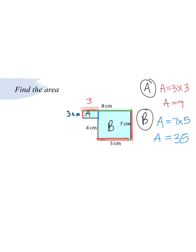And then the last step is to add our areas. So we're doing 35 plus 9, which will give me 44 centimeters squared.